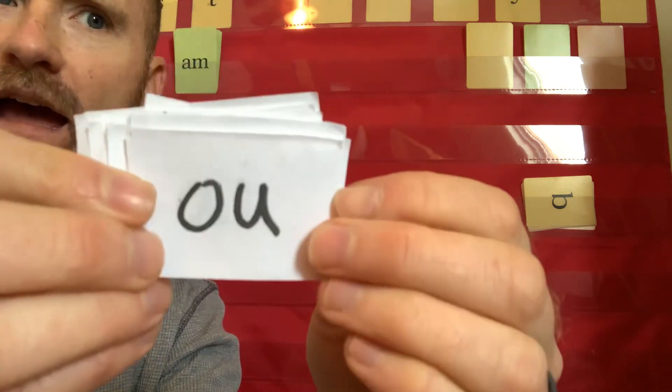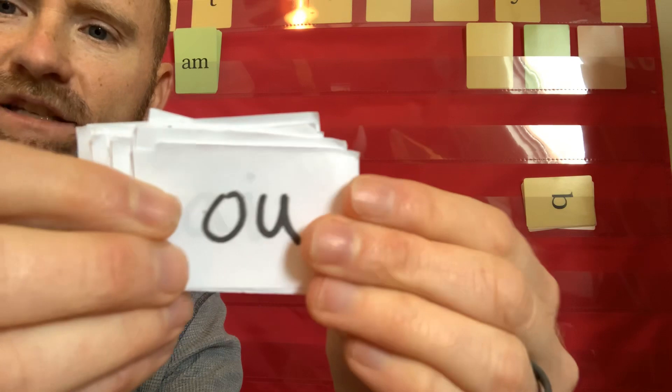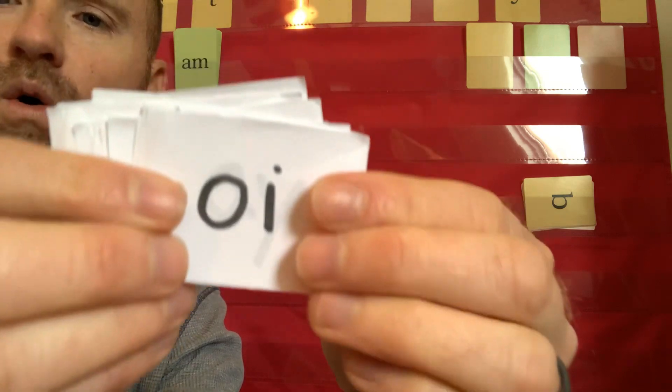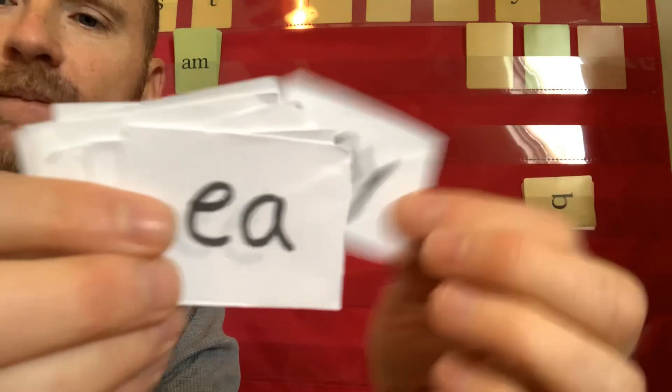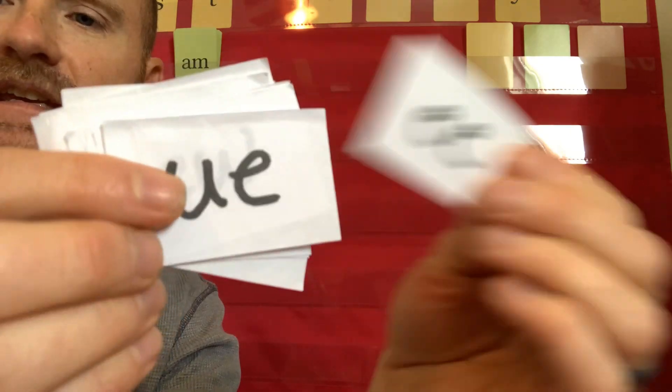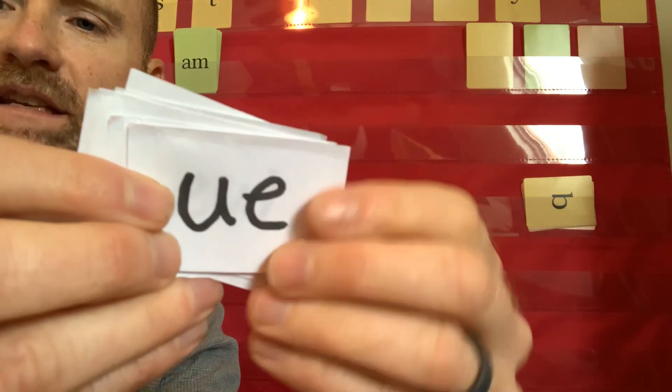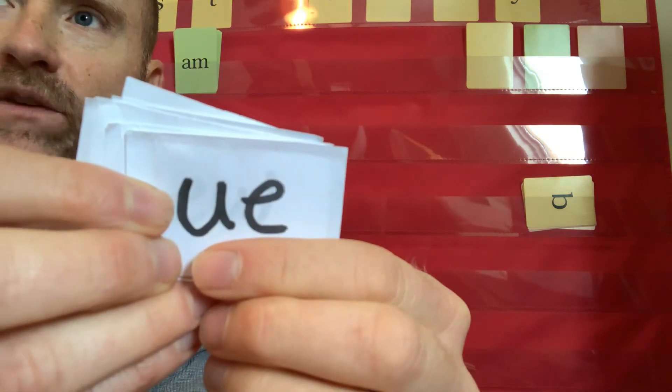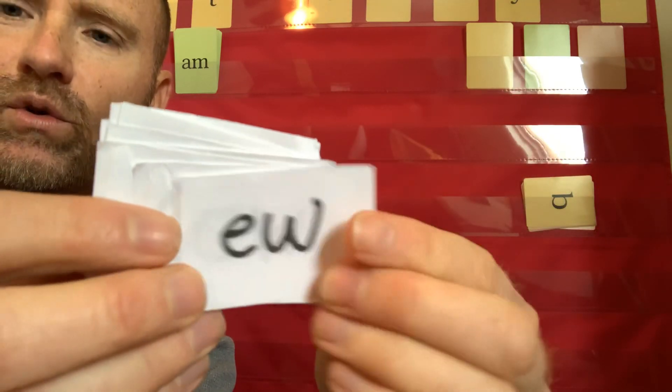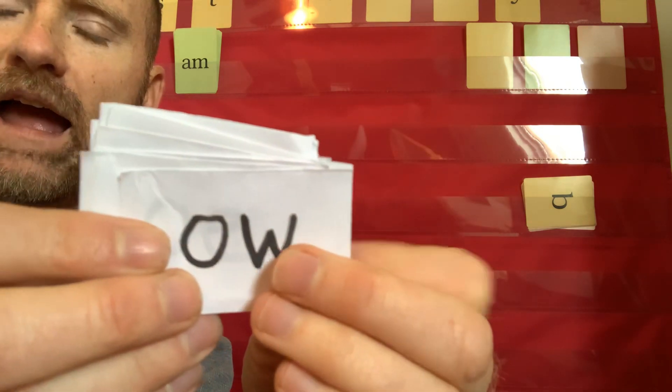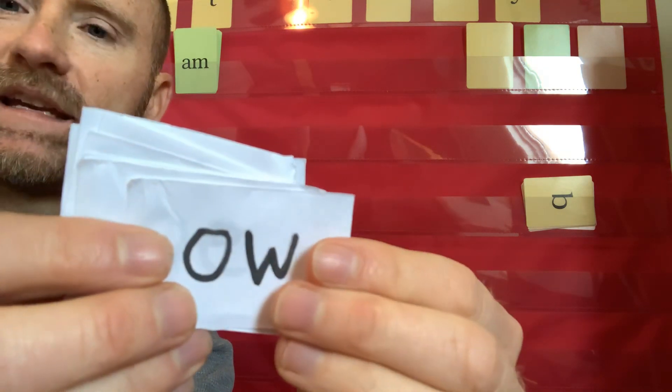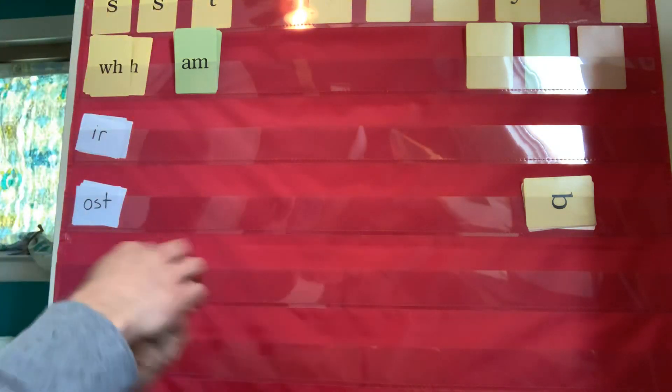O-U. What sounds can they make? Ow, like in out. What other sound? O-U, like in soup. A-I? A. O-I? Oy. A-Y? A. E-A? E. Says the name of the first vowel. E-E? E. U-E? What sounds can they make? Two different sounds. U, like in rescue, or U, like in blue. E-W. What sound? U. O-W? Ow or O. Ow like in plow, or O like in snow. Good job.